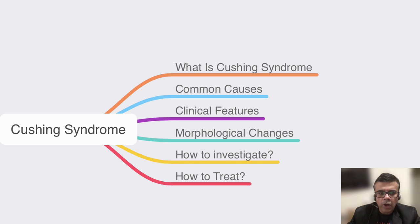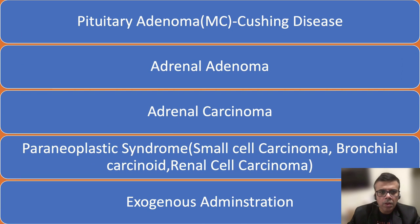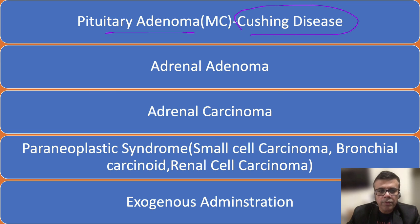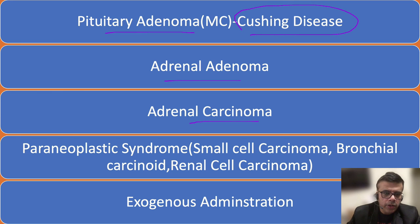The most important cause is pituitary adenoma, also known as Cushing's disease. If Cushing syndrome is caused solely due to pituitary adenoma, it is known as Cushing's disease. It could also be caused by adrenal tumors — adenoma more commonly, or sometimes adrenal carcinoma.